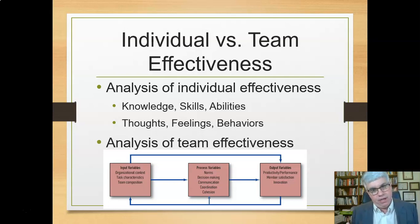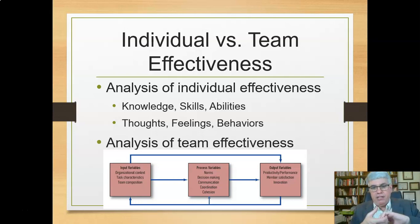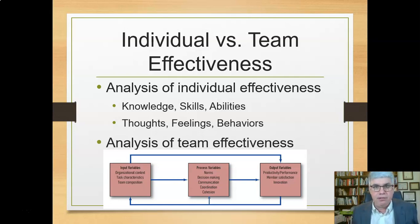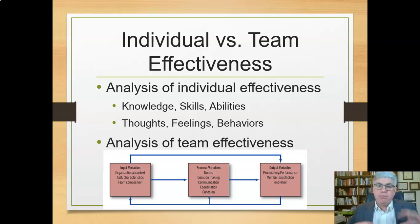It's still very complicated to measure individual effectiveness, but we can do it. With team effectiveness, it gets really complicated because you've got a whole bunch of individuals — not only with knowledge, skills, and abilities creating thoughts, feelings, and behaviors — but you've got a whole lot of processes going on between them. So we tend to use what's known as this IPO model of team processes to help sort through everything that's going on.